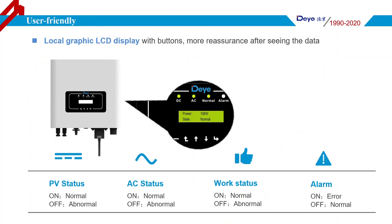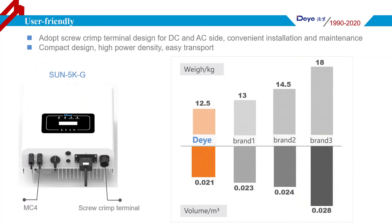With the screw-clamp terminal design for both DC and AC sides, installation and maintenance become convenient and easy. The RS485 string inverter also features high power density compared with other brand inverters. For example, the 5K model weighs only 12.5 kg and has a volume of 0.021 m³. This concludes our introduction — thank you.